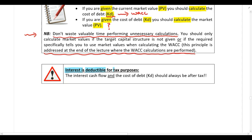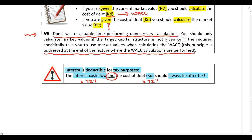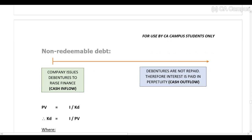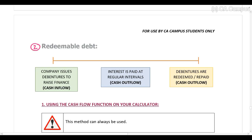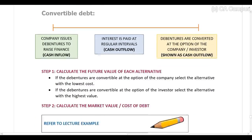Because interest is tax deductible, your interest cash flow and the cost of debt must always be after tax. You multiply the interest cash flow by 72% to get the after-tax interest cash flow — assuming a tax rate of 28%. You do exactly the same with the cost of debt, multiplying by 72% to get the after-tax cost of debt.